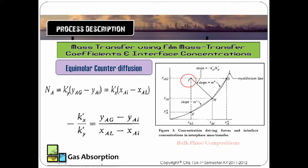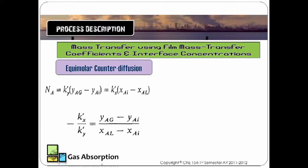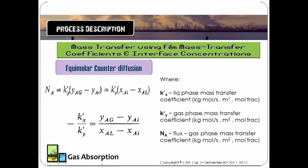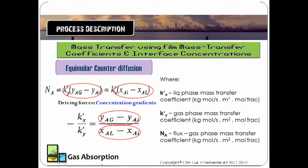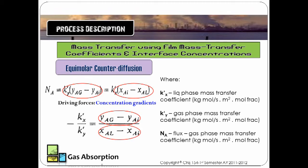At the bulk phase composition, that is at point B, and at the interphase composition, that is at point M. Here are the notations of K'X and K'Y and NB, which is the flux gas phase mass transfer coefficient. The driving forces are concentration regions for the equimolar counter-diffusion.